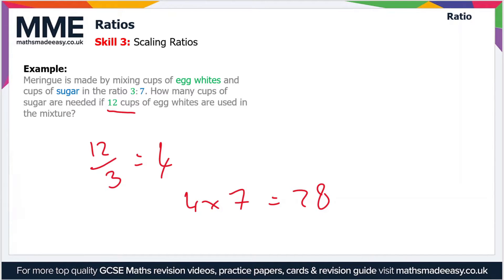So just for the sake of completion, let's write out the full ratio that's been scaled up. So if we have 12 cups of egg whites and 28 cups of sugar, the ratio is 12 to 28.